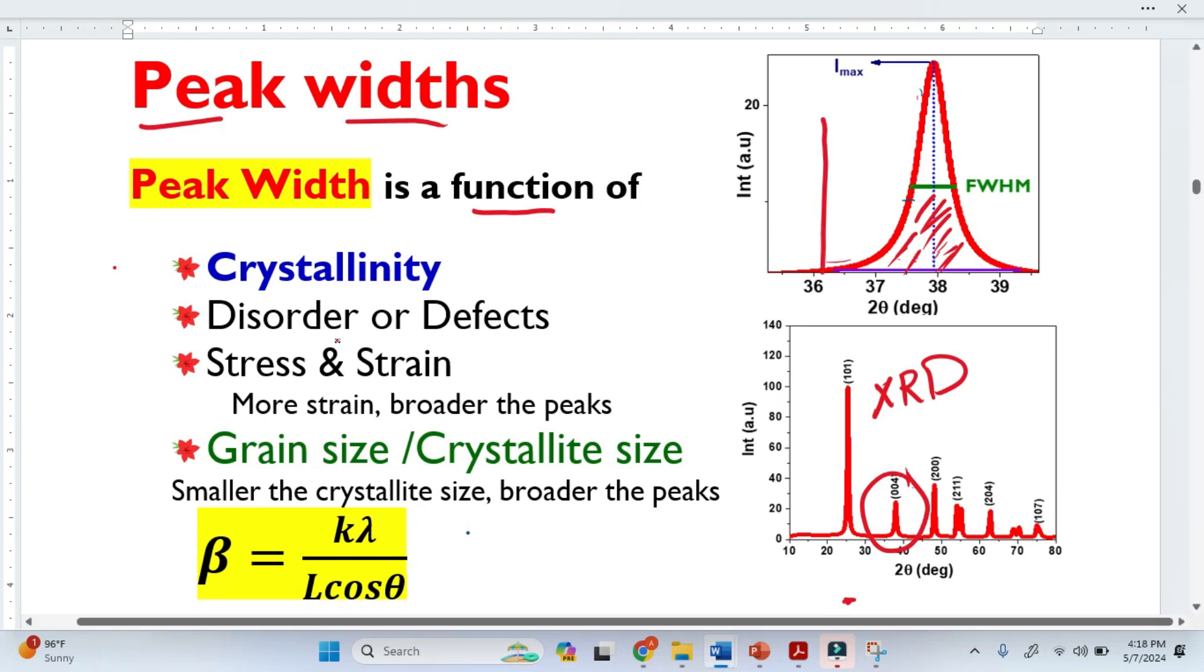The second thing is the disorder or defects in a material. We know that no material is free from defects. So because of these defects, we have broader peaks. The third important thing is the stress and strain. We know that there are residual stresses in a material—residual means not applied from outside. It is internal stresses, residual, and it is tensile and compressive. And because of those tensile and compressive stresses, this interplanar spacing is decreasing and increasing.